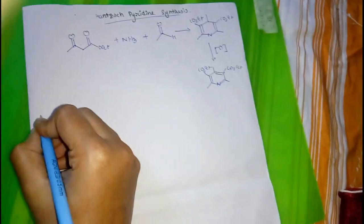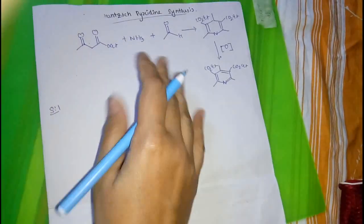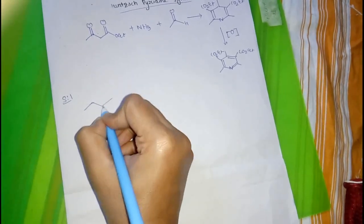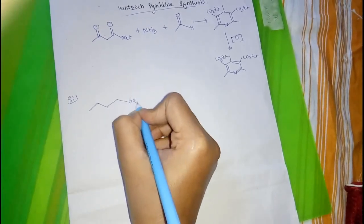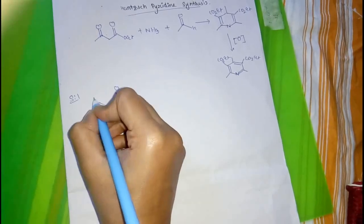In step 1, enamine will form. At first, in ethyl acetoacetate, two carbonyl carbons are present.